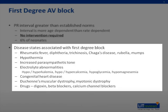There are several disease states associated with first-degree AV block. The infectious causes include, but are not limited to, rheumatic fever, diphtheria, trichinosis, Chagas disease, rubella, and mumps. Other causes are hypothermia and an increased parasympathetic tone.